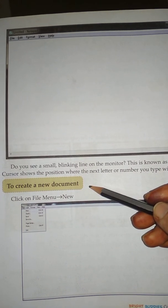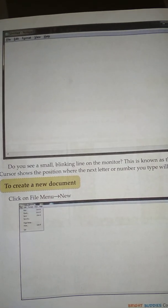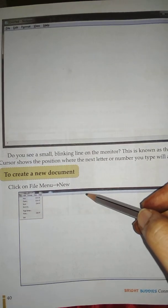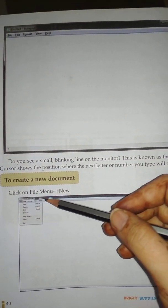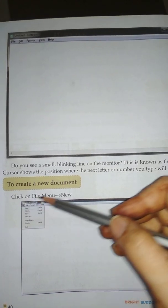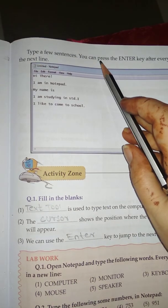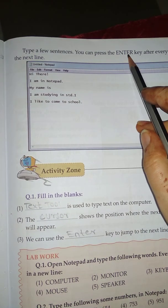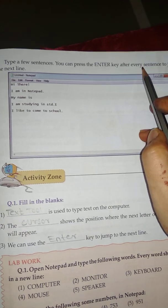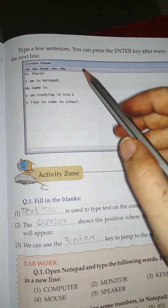To create a new document, click on the File menu, then click New. Type a few sentences. You can press the Enter key after every sentence to jump to the next line.